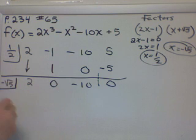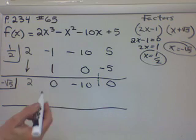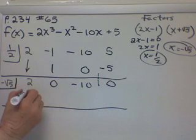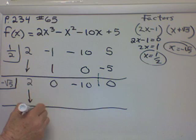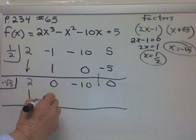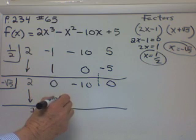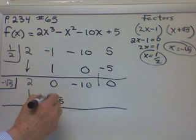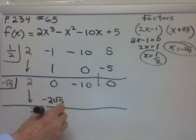Because it has to work. They told me it was an answer. So let's draw our line and get busy here. Okay, bring down the 2. So 2 times negative root 5 is negative 2 root 5. Add to 0 and I get negative 2 root 5.